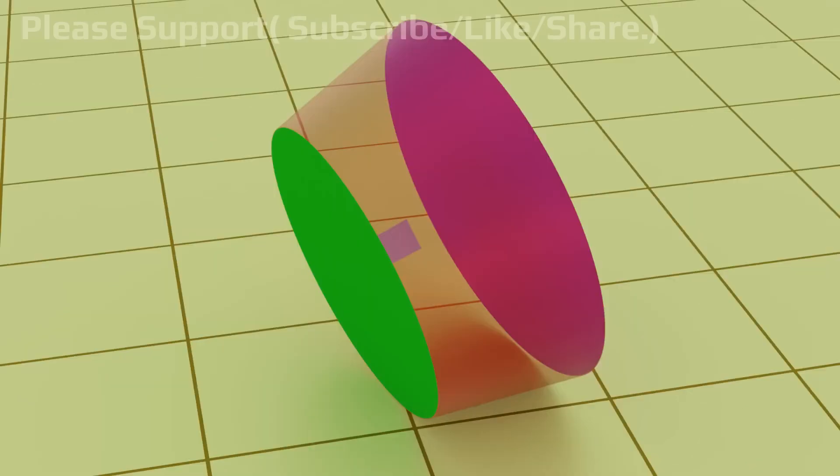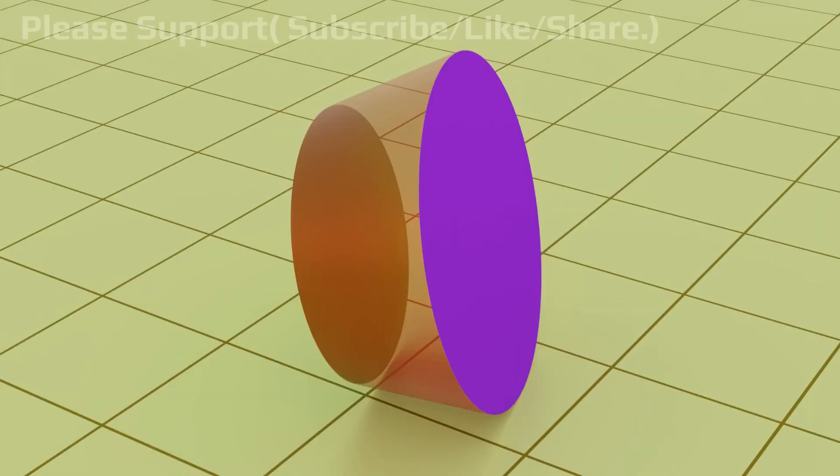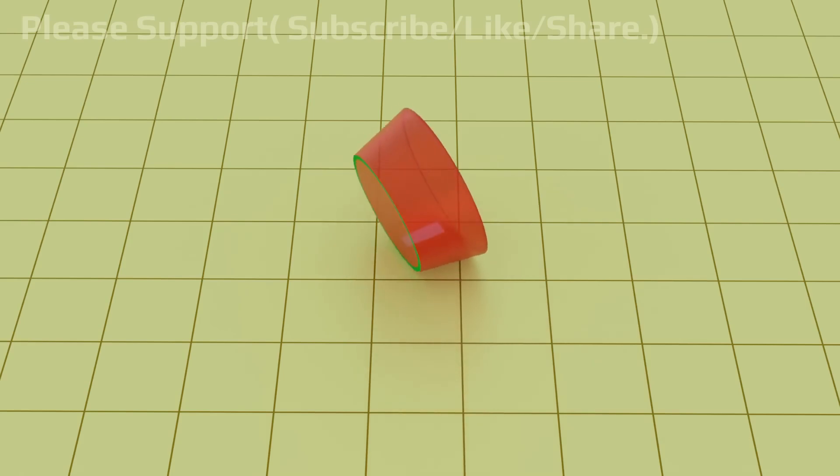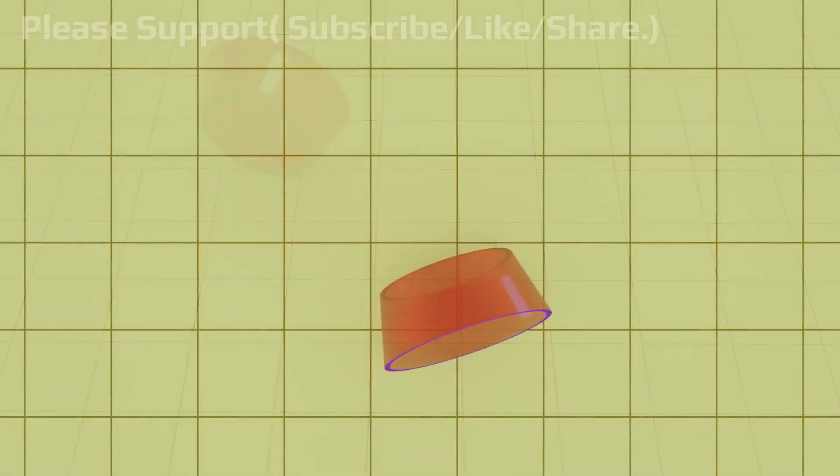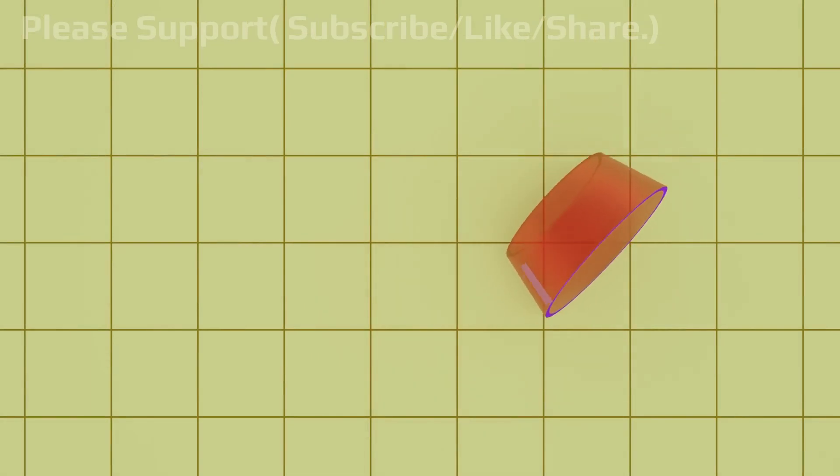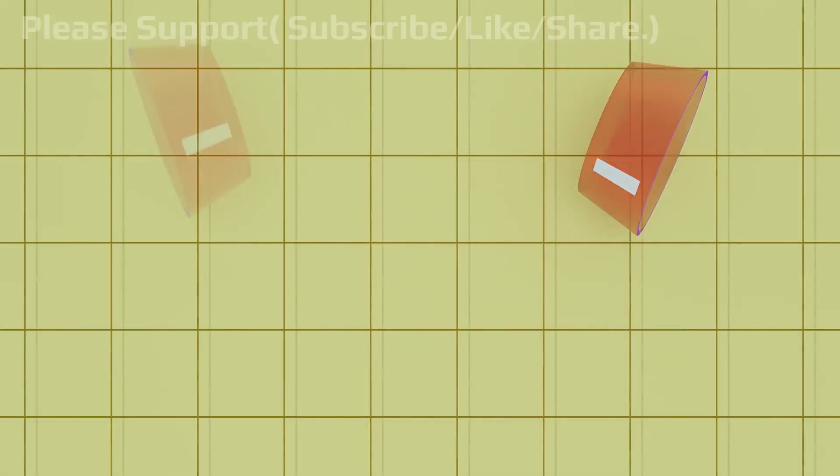Or you can say the green side diameter is smaller and the opposite side diameter is bigger. At the same rolling speed, the larger section will try to cover more distance than the smaller side. While rolling, a semi-cone always turns towards the smaller side.